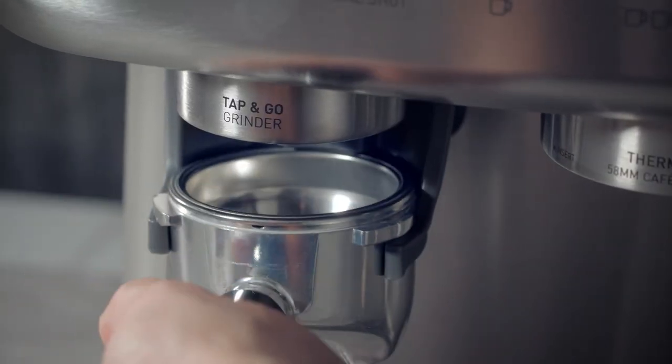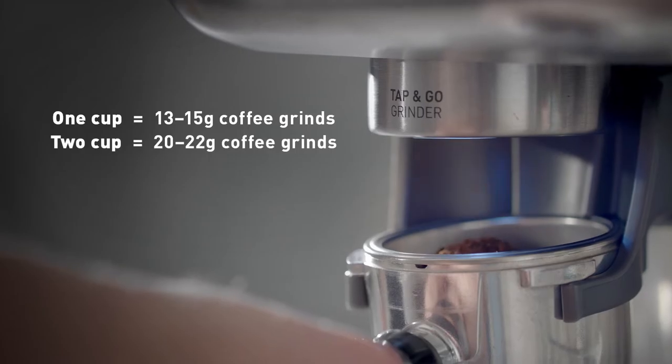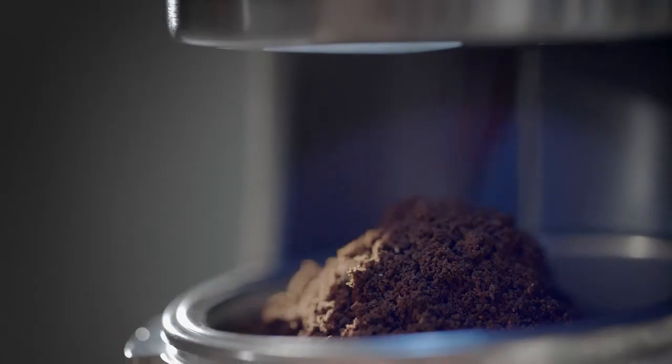Place the group handle into the tap and go grinding cradle and push down to begin grinding. Once the group handle is full, you're ready to tamp.